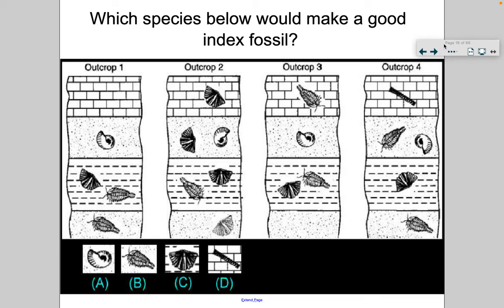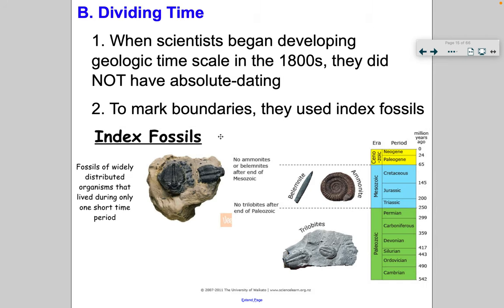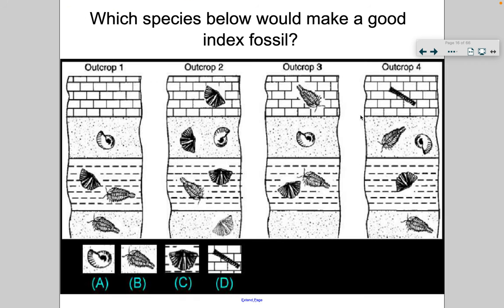Let's see if we understand what index fossils are. Here I have different outcrops representing different rock layers and the fossils found in them. Which species — A, B, C, or D — would make a good index fossil? Index fossils are organisms that lived only a short period of time and are found in just one layer. Looking at A, it appears in the same layer across multiple outcrops and not in any other layer — that's already a pretty good candidate for an index fossil.